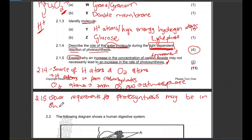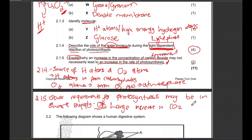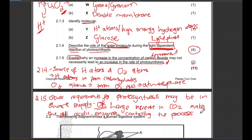You only need to give one answer for two marks. Either: other requirements for photosynthesis may be in short supply, OR: a large increase in carbon dioxide makes the pH acidic and the enzymes controlling the process of photosynthesis will be damaged. Either answer is sufficient to get full marks.